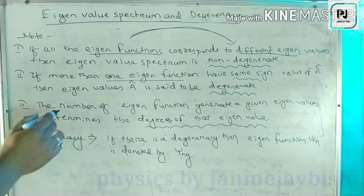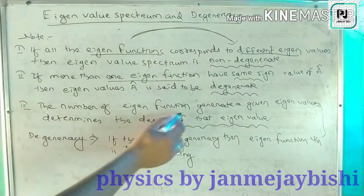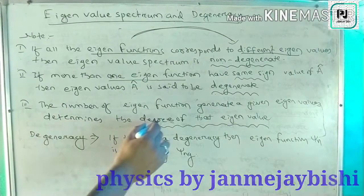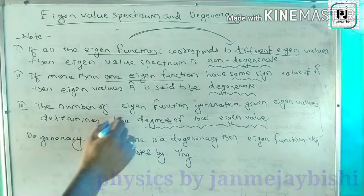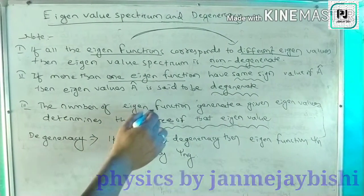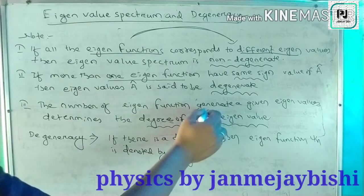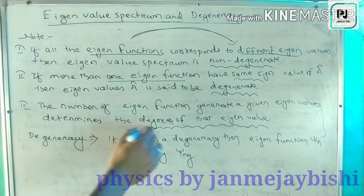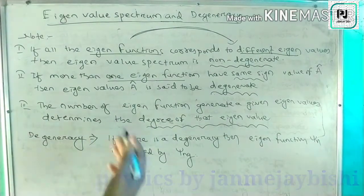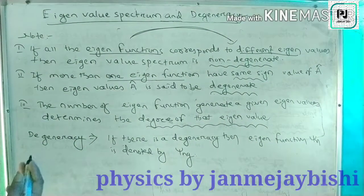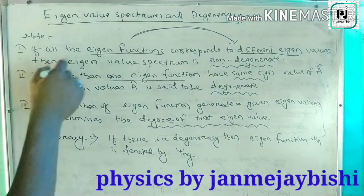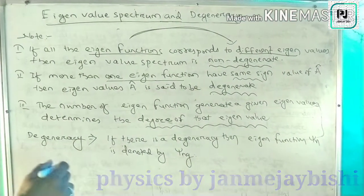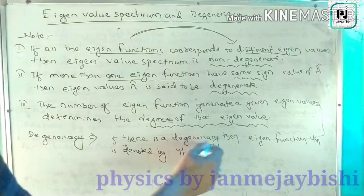The number of eigenfunctions that correspond to a given eigenvalue determines the degree of that eigenvalue. The eigenfunctions generate a number of eigenvalues, and that count is called the degree of the eigenvalue. For example, if two values come, there is a degree of two. These are the notes for eigenvalues, spectrum, and degeneracy.